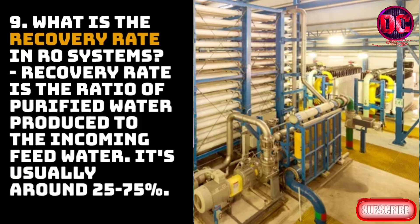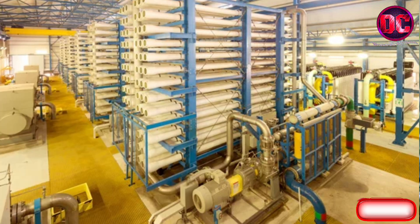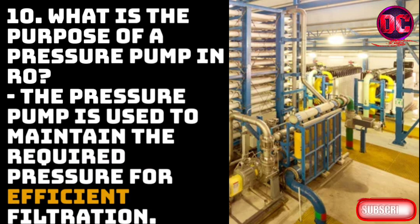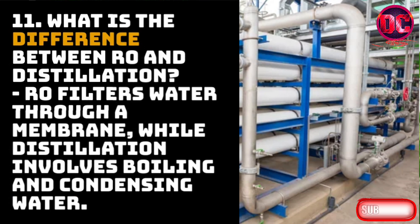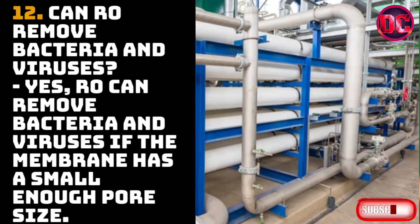9. What is the recovery rate in RO systems? Recovery rate is the ratio of purified water produced to the incoming feed water — usually around 25 to 75%. 10. What is the purpose of a pressure pump in RO? The pressure pump is used to maintain the required pressure for efficient filtration. 11. What is the difference between RO and distillation? RO filters water through a membrane, while distillation involves boiling and condensing water. 12. Can RO remove bacteria and viruses? Yes, RO can remove bacteria and viruses if the membrane has a small enough pore size.